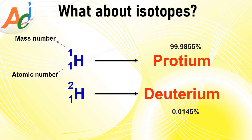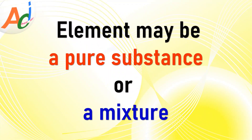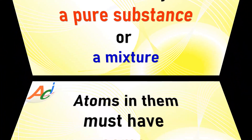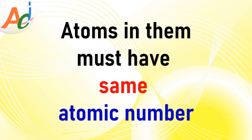So when we look at hydrogen gas, it is essential to recognize that even though it is composed of two isotopes, they are still the same element due to their identical atomic number. This raises an interesting question about whether elements can be considered pure substances or mixtures. We can conclude that an element may be a pure substance or a mixture — this represents the contemporary perspective on elements. It is crucial to bear in mind that atoms within an element must possess the same atomic number. That is very important.